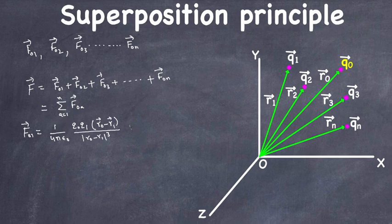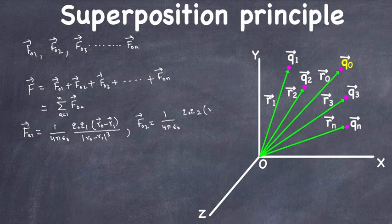Similarly, F naught 2 can be written as 1 over 4 pi epsilon naught, times Q0 times Q2, times the vector (R0 minus R2) divided by the magnitude of (R0 minus R2) cubed.